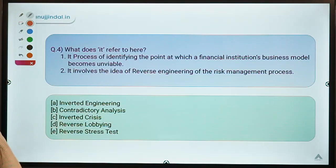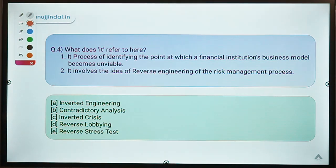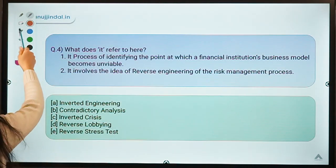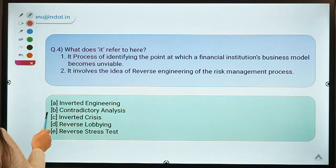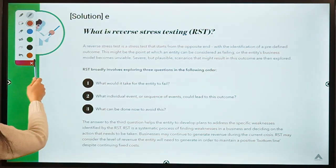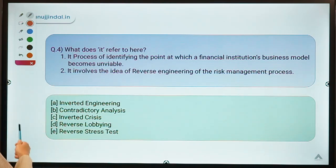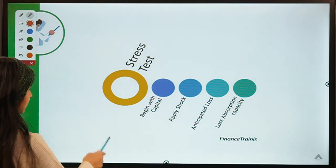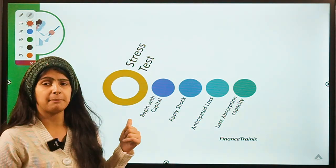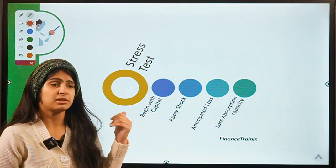Moving right to question number four. This question says: what does it refer to? Two statements are given about a particular process or thing and you have to identify the correct option. The correct option is option E, which means reverse stress test.